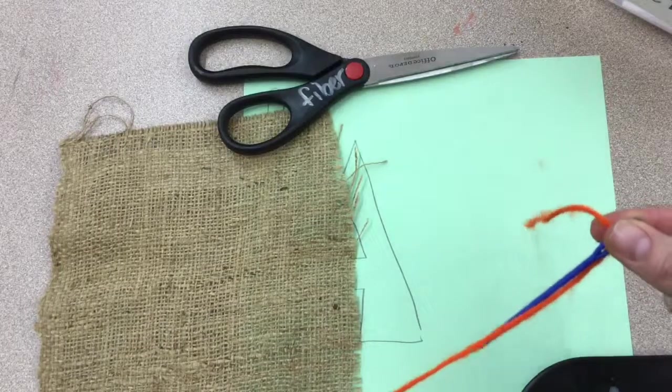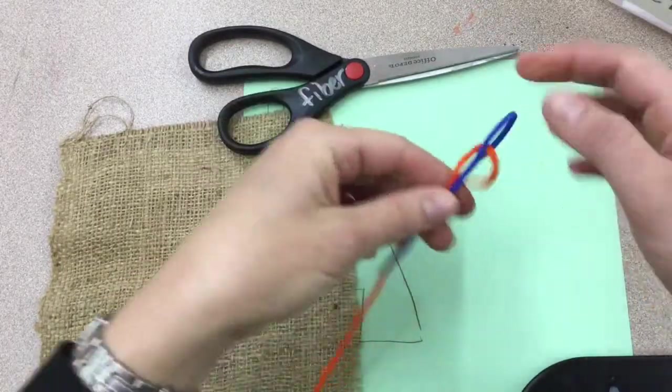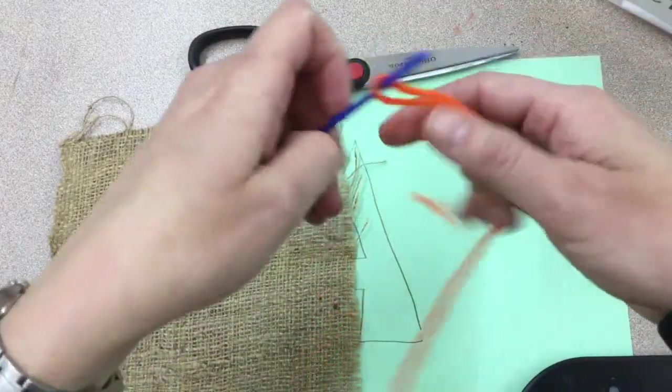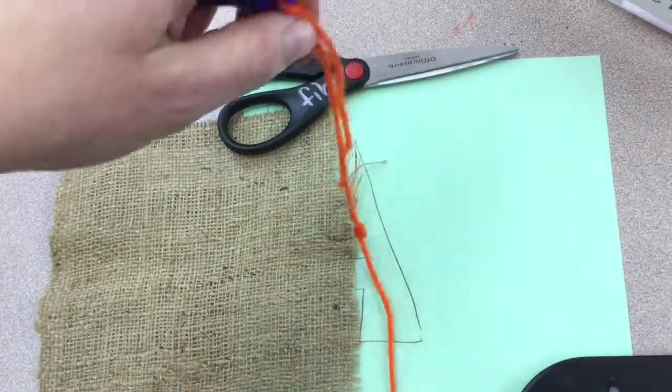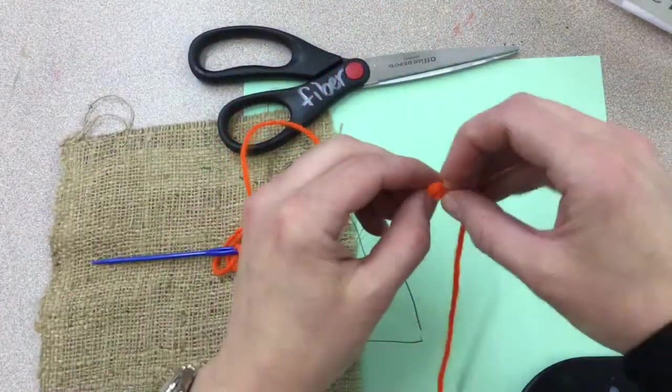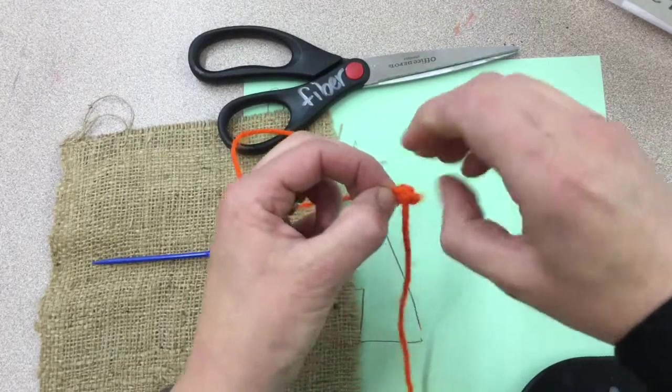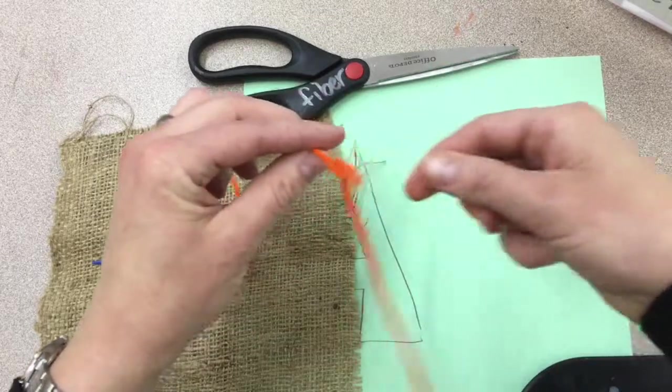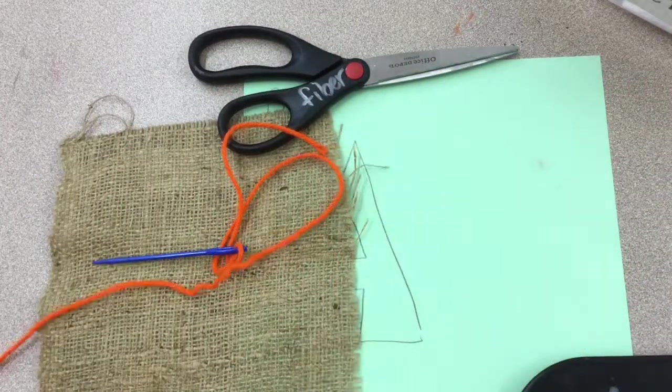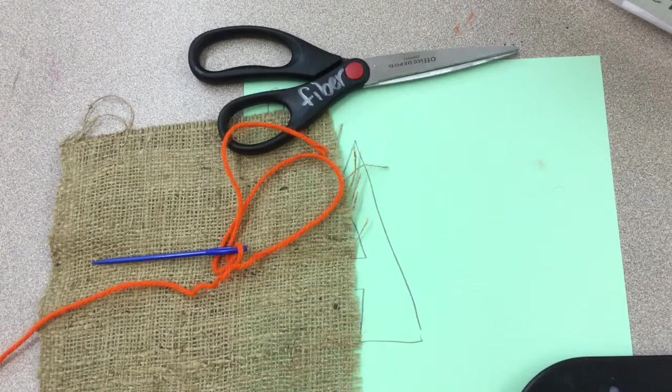We are just going to leave a little tail hanging as it shows you on the needle threading poster which is in the fiber center. If you have a knot like this in your string, we will need to untie that. That will not go through your fabric, so you want to be careful when you're getting your yarn set up.